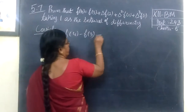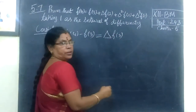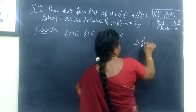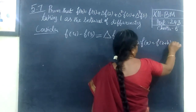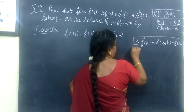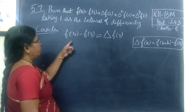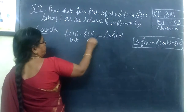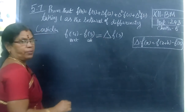This is nothing but del of F3, because del of F is equal to F of S plus 1 minus F of S. The next point: this is nothing but del of F3.